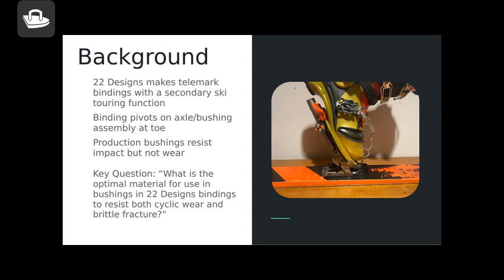The current production bindings resist shock loading well, which is jumps, crashes, that kind of thing. They do not limit touring wear, so when the skier goes uphill and places skins on the bottom of the ski, similar to a cross-country ski for backcountry travel, they last around 10 days of hard use before the bushings start to critically ovalize and impinge on function. So the key question is, what is the optimal material for use in bushings and 22 Designs bindings to resist both cyclic wear and brittle fracture?